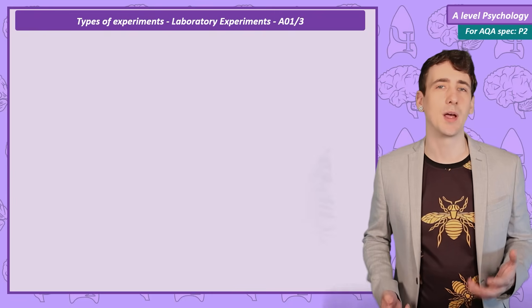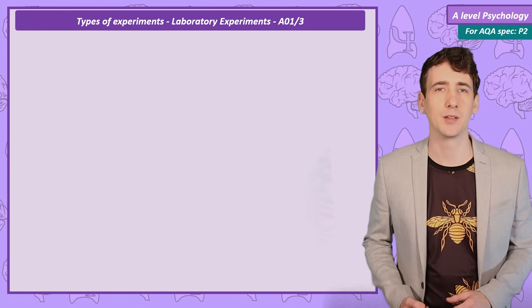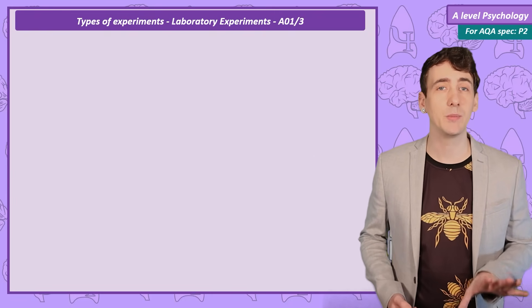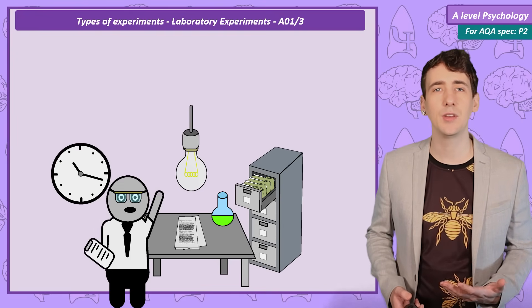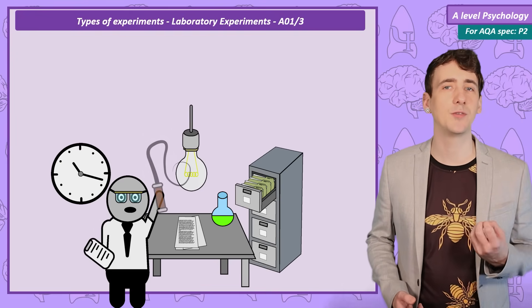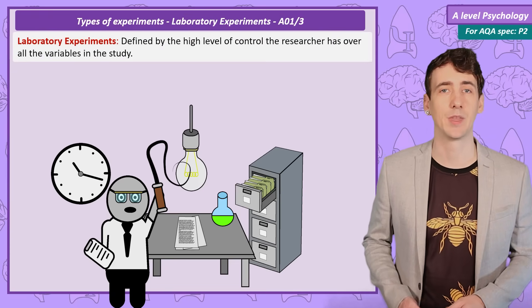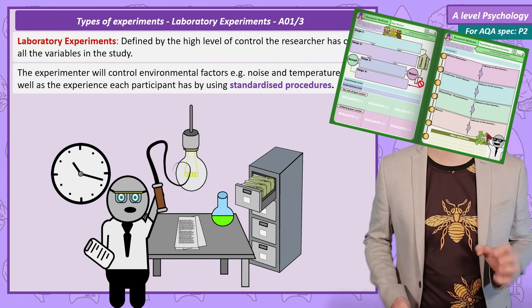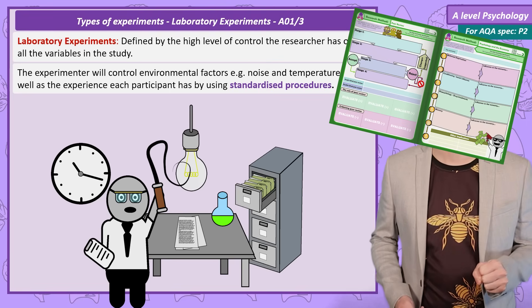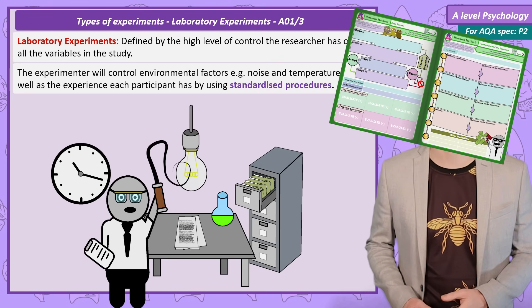The first type — a laboratory or lab experiment — is probably familiar to you. A lab experiment could literally be set in a laboratory, but the important principle is the experimenter has full control over what happens. Environmental factors like noise, temperature, and even the instructions given to participants are all highly controlled and don't vary between conditions.